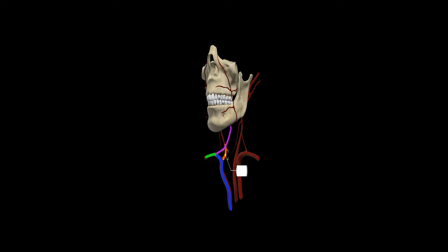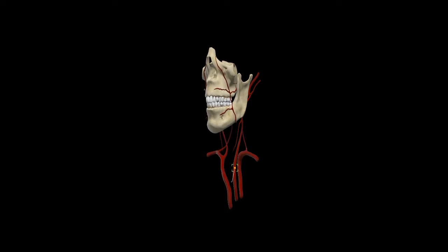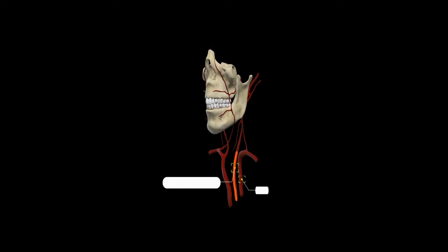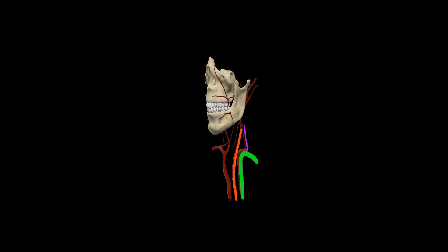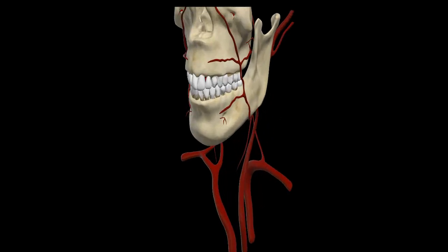The right common carotid artery is the main blood supply for the head. On the left side, the aorta gives rise to the left common carotid artery, left subclavian artery, and left vertebral arteries separately — there is no left brachiocephalic trunk. It is present only on the right side, so the left and right carotid arteries have an asymmetrical origin from the aortic arch.